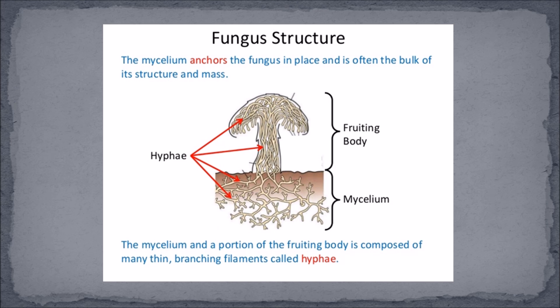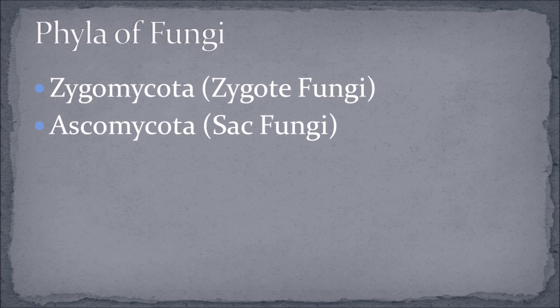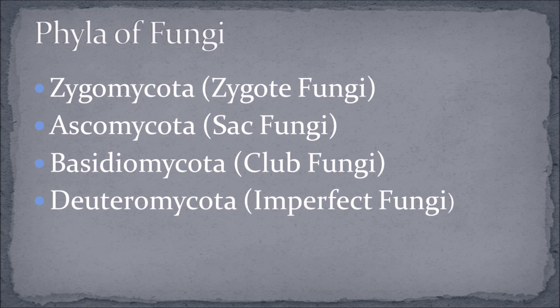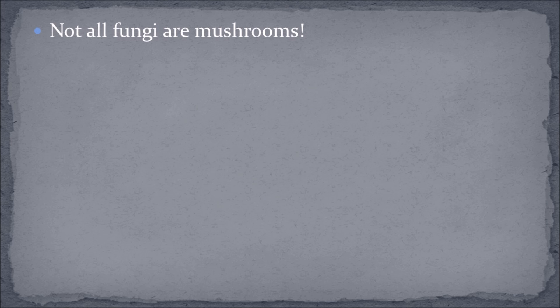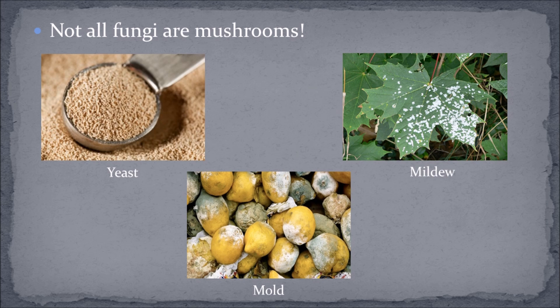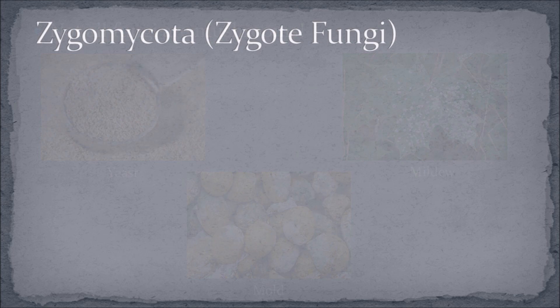The four common phyla we will learn about are zygomycota, ascomycota, basidiomycota, and deuteromycota. All four phyla end with the suffix 'mycota' — in Greek, mycota means mushrooms or fungi. However, not all fungi are mushrooms; yeast, mildew, and molds are also types of fungi. Let's dive into the four phyla right now.